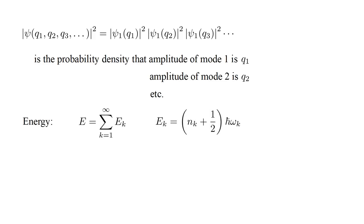And the energy of the entire system is the sum of all mode energies, n_k plus one-half times h-bar omega k. N_k is the number of energy quanta in mode k.